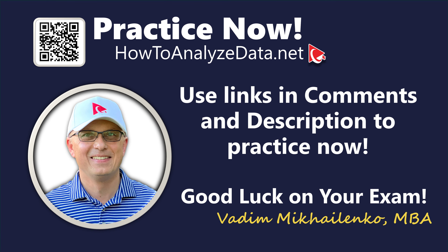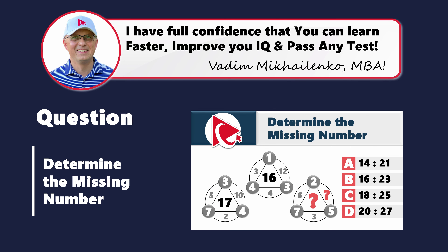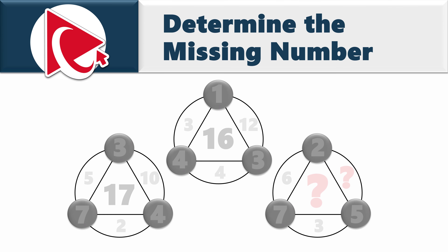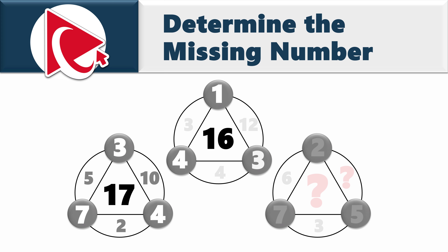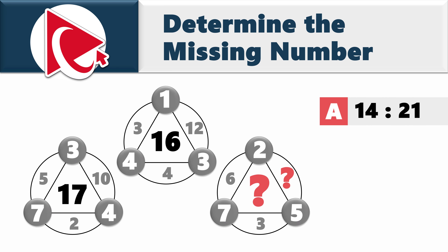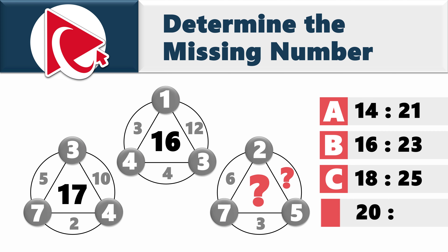And now your time to radiate has arrived. You're presented with three unusually looking shapes. The first shape has number 17 in the middle, numbers 7, 3, and 4 in small circles, and numbers 5, 10, and 2 inside the large circle. The second shape has number 16 in the middle, numbers 4, 1, and 3 inside the small circles, and numbers 3, 12, and 4 inside the large circle. The third shape has two numbers missing; the numbers in the small circles are 7, 2, and 5, and the other two numbers present are 6 and 3. Your goal is to calculate two missing numbers and select them out of four choices: A (14 and 21), B (16 and 23), C (18 and 25), or D (20 and 27). Solve the challenge, then drop your solution in comments.